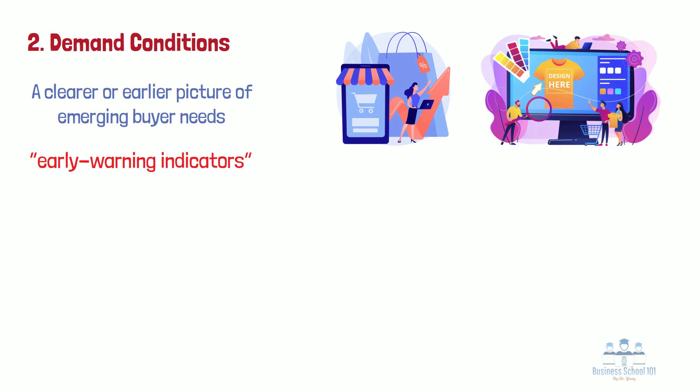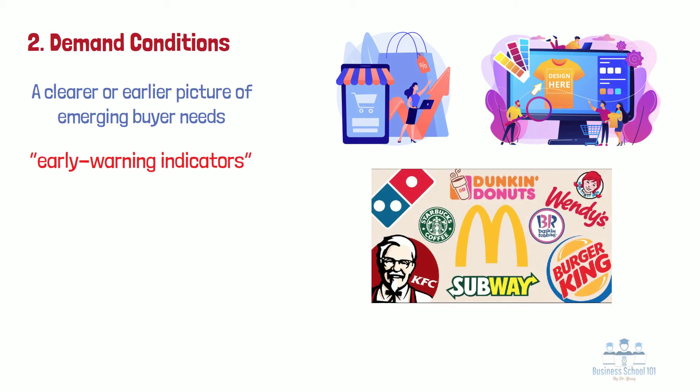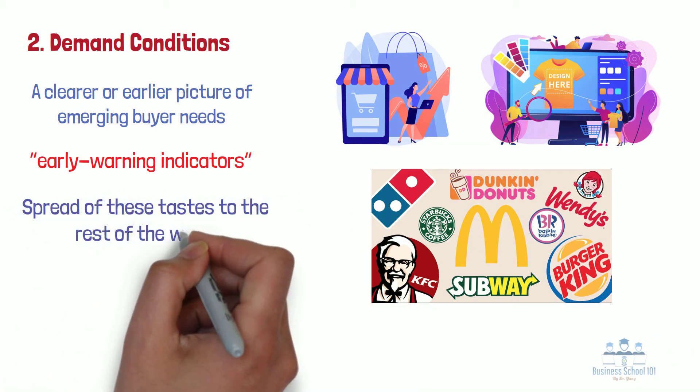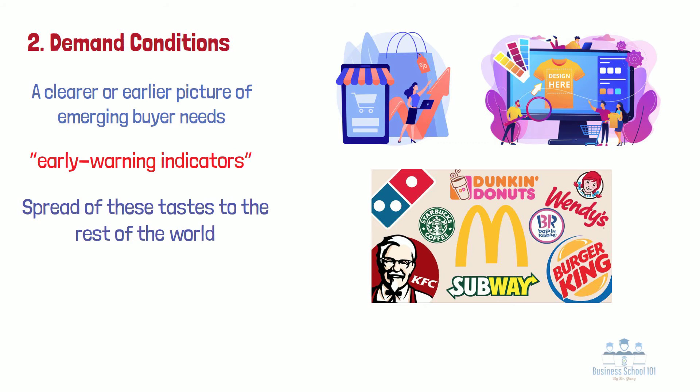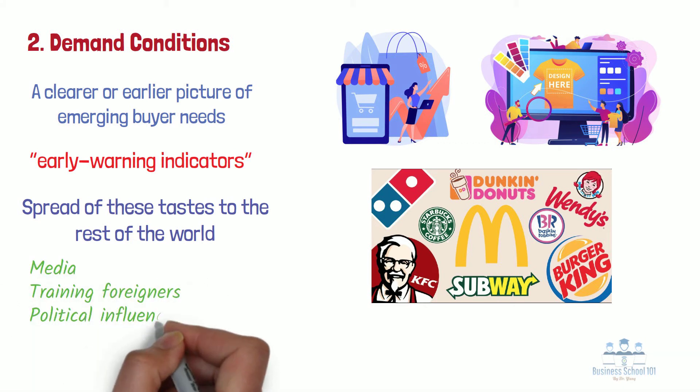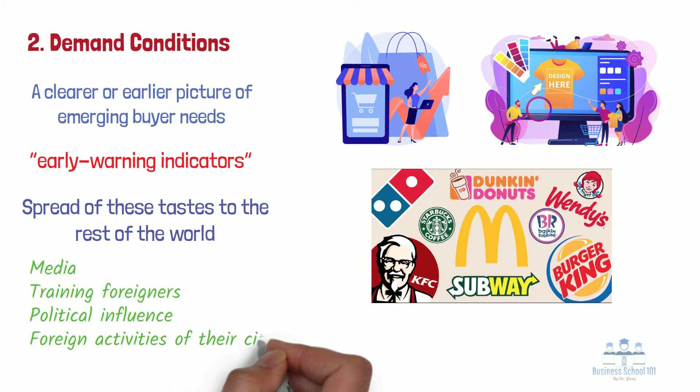Sometimes anticipatory needs emerge because a nation's political values foreshadow needs that will grow elsewhere. For example, Sweden's long-standing concern for handicapped people has spawned an increasingly competitive industry focused on special needs. More generally, a nation's companies can anticipate global trends if the nation's values are spreading. For example, the international success of U.S. companies in the fast food industry reflects not only the American desire for convenience, but also the spread of those tastes to the rest of the world. Nations export their values and tastes through media, training foreigners, political influence, and through the foreign activity of their citizens and companies.